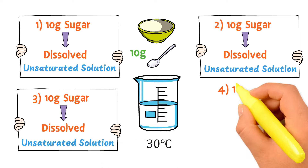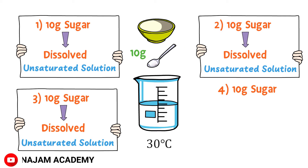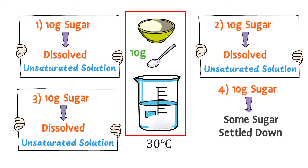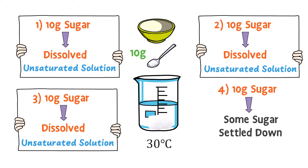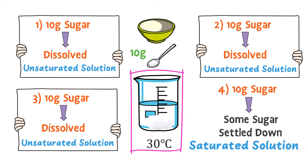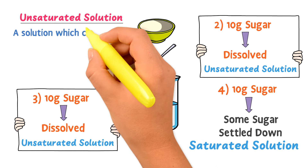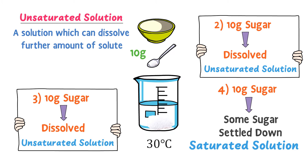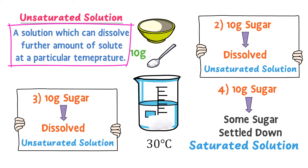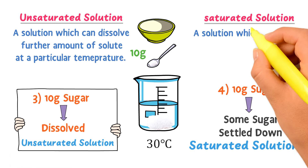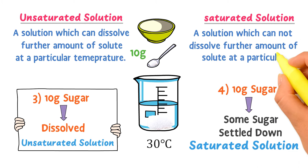Finally, consider that I add 10 grams more sugar, but this time the water dissolves some sugar and some sugar settles down at the bottom. It is no longer an unsaturated solution — it is now a saturated solution, because the water or solvent has no ability to dissolve further amounts of sugar. Therefore, we define unsaturated solution as a solution which can dissolve further amounts of solute at a particular temperature, while a saturated solution is a solution which cannot dissolve further amounts of solute at a particular temperature.